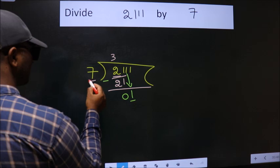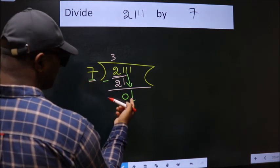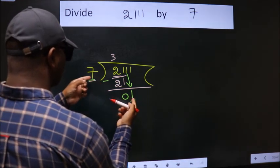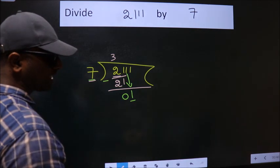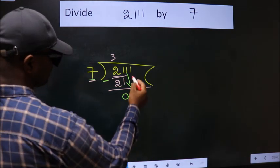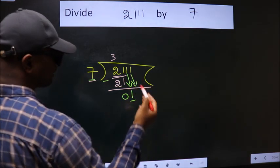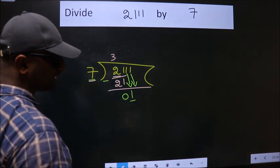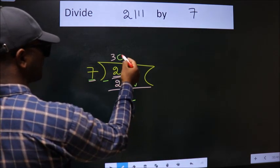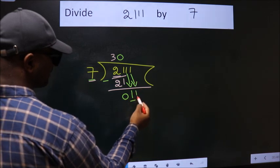Here we have 1, here 7. 1 is smaller than 7, so we should bring down the second number. And the rule to bring down second number is put 0 here. Then only we can bring down this number.